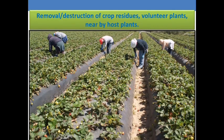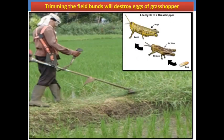Examples of clean cultivation: removal and destruction of crop residues or volunteer plants near the host plant — here workers in a strawberry field collect and destroy plant debris or fallen plant parts, because hibernating pest stages shelter there. Trimming the field bunds is very effective in reducing grasshopper infestation, especially in a rice field — it helps destroy eggs of the grasshopper, which is a major pest of rice.